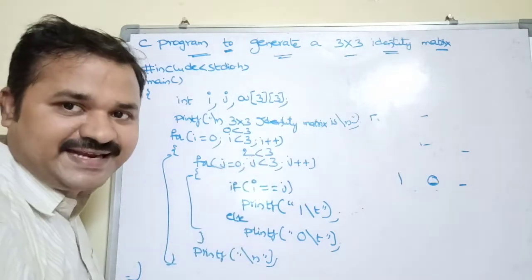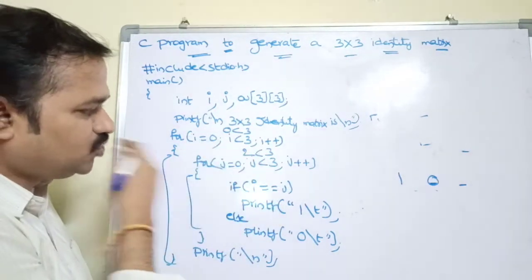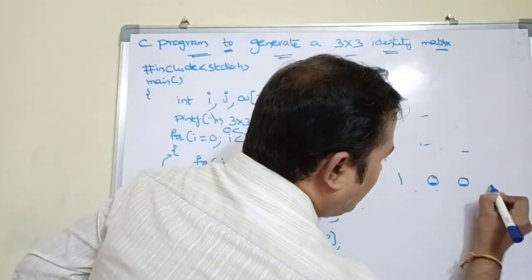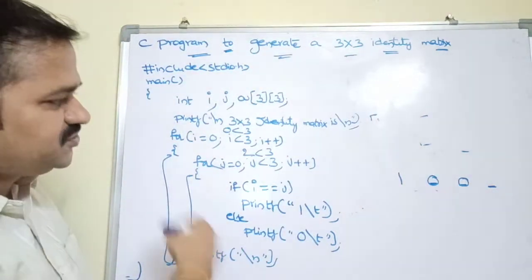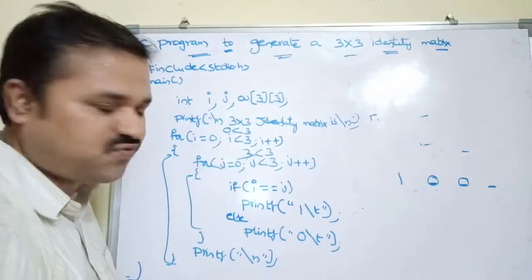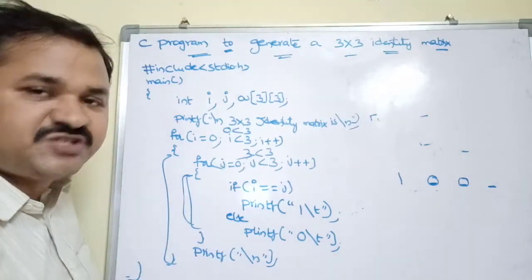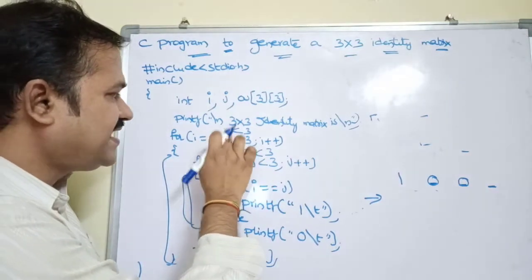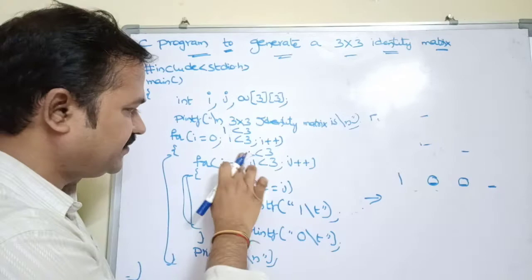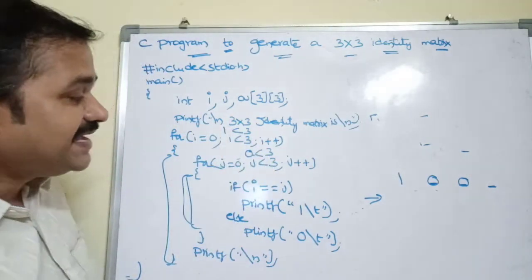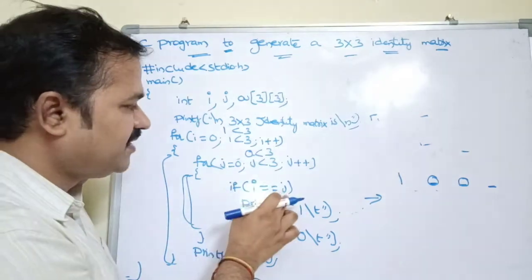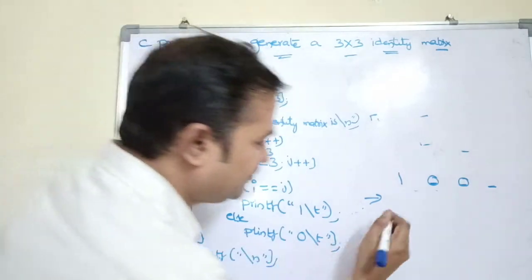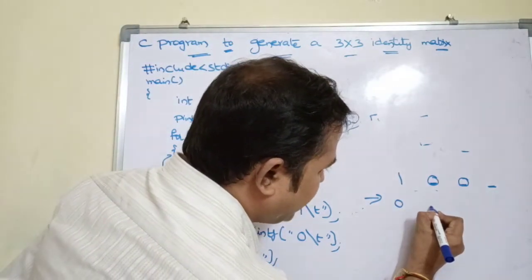j becomes 3; 3 < 3 is false, so the control comes out of the j-loop and printf("\n") moves the cursor to a new line. i becomes 1; 1 < 3 is true. For j=0: i=1, j=0; 1 == 0 is false, so 0 is printed. j becomes 1: i=1, j=1; 1 == 1 is true, so 1 is printed. j becomes 2: i=1, j=2; 1 == 2 is false, so 0 is printed.